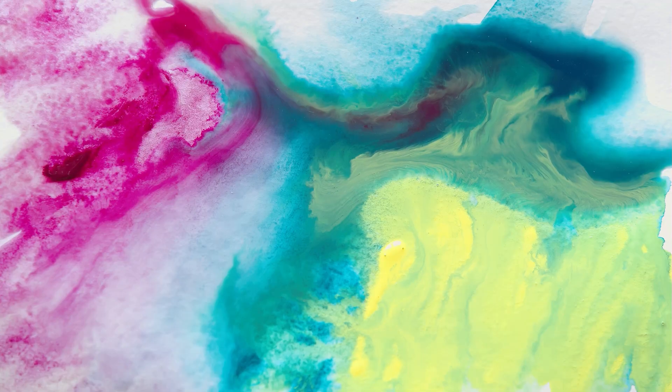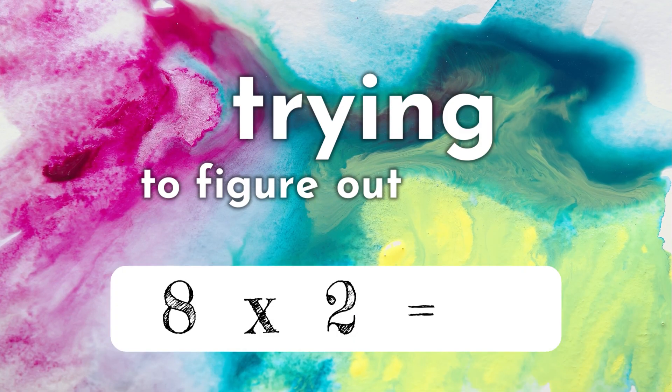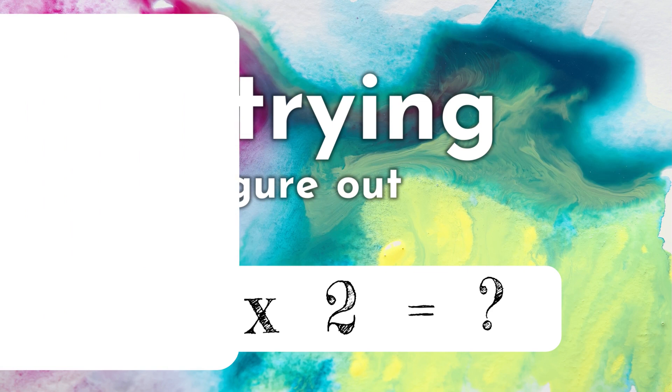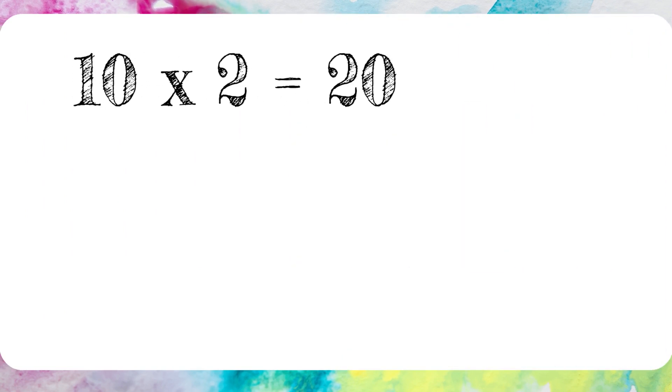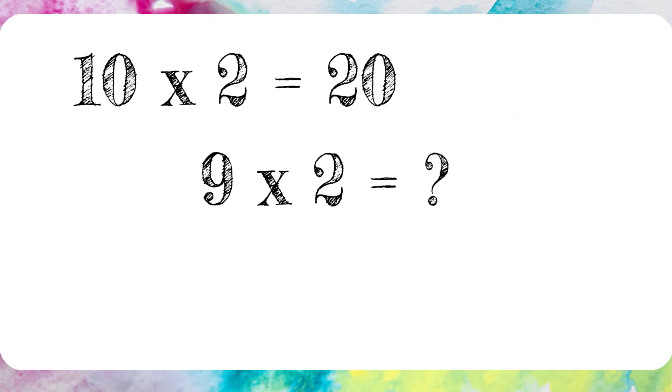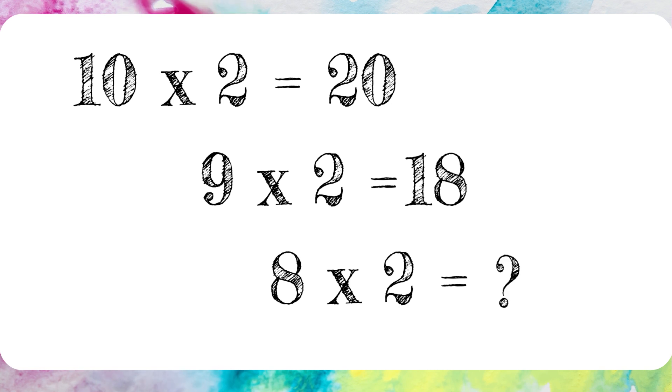A really helpful way is keeping track of numbers for them. For instance, if they're trying to figure out what 8 times 2 is, you say: well, you know that 10 times 2 is 20 — so what's 9 times 2? You take 2 away from 20, that gives you 18. Now you're trying to find 8 times 2, so I'll hold on to 18 — you take 2 more away, that gives you 16. If they feel they can trust you to hold on to a number for them, they'll feel more comfortable doing relationship math in their mind.